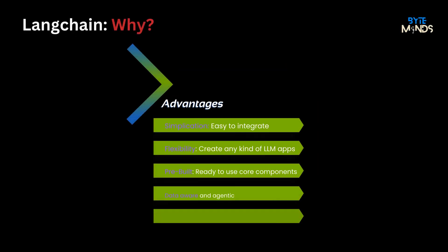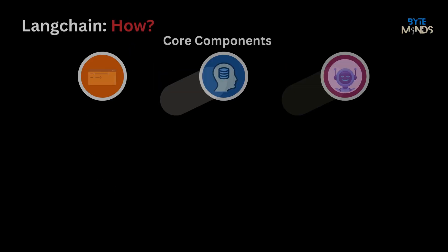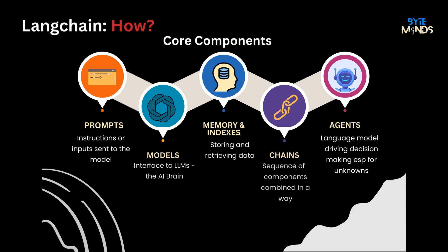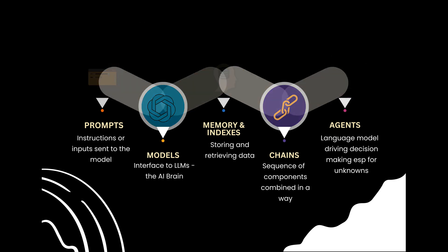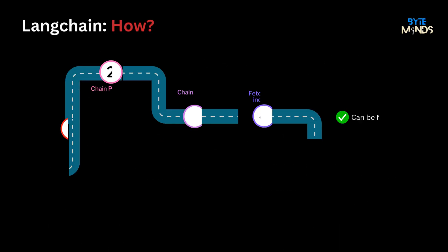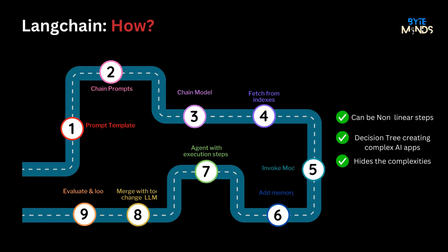It brings simplicity, flexibility, and agility into your venture. Underneath LangChain's hood lie code-building blocks shown here. Building your AI app involves getting comfortable with these elements and weaving them together, and they can be organized in non-linear steps — sort of like a decision tree — to create any complex app.